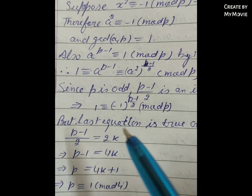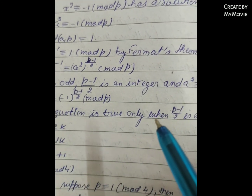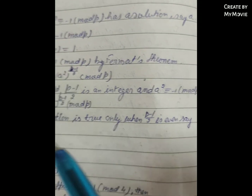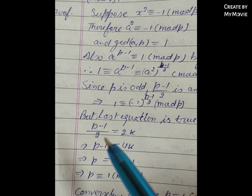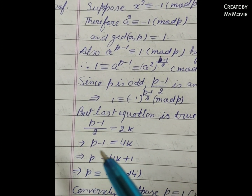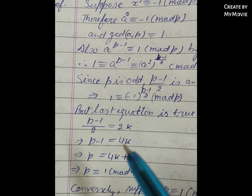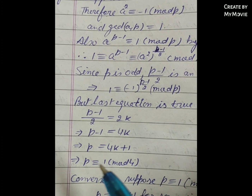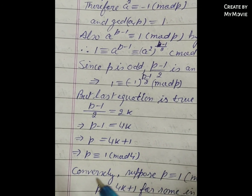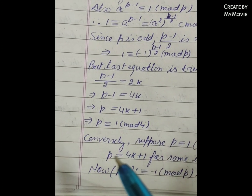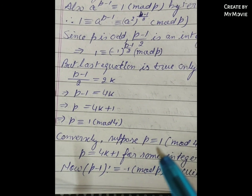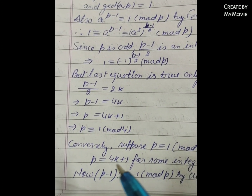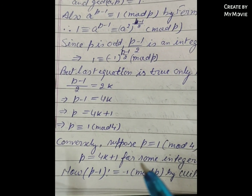But this last equation holds only when (p-1)/2 is even, so p-1 = 4k, meaning p = 4k+1, or equivalently p ≡ 1 (mod 4). Conversely, suppose p ≡ 1 (mod 4), so p = 4k+1 for some integer k.